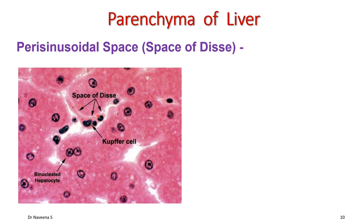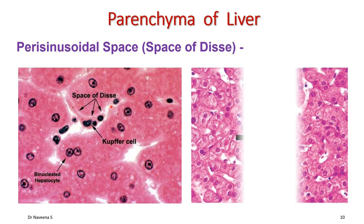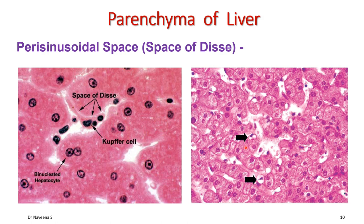The space of Disse contains Ito cells, which are also called lipid cells. They produce type 3 collagen or reticulin fibers into the space of Disse.